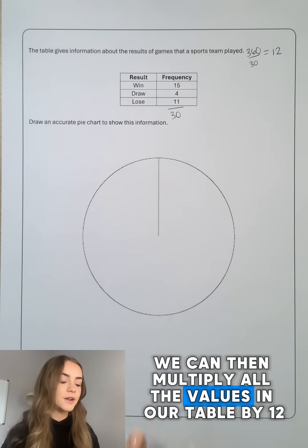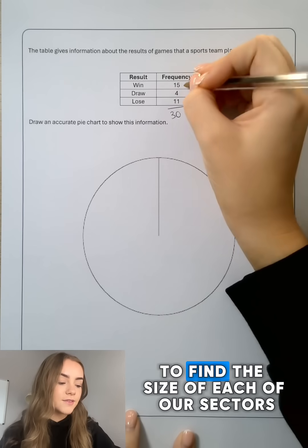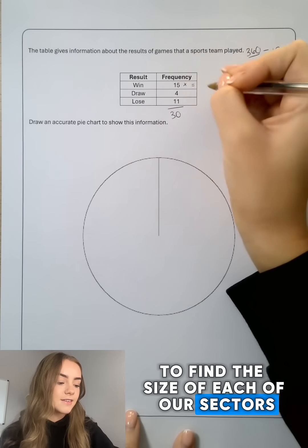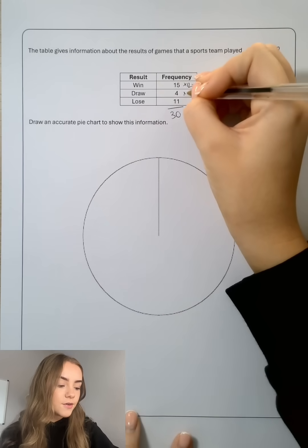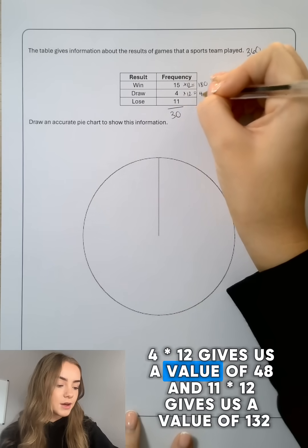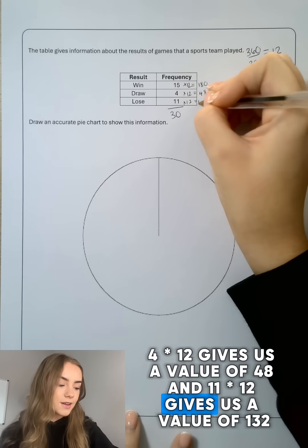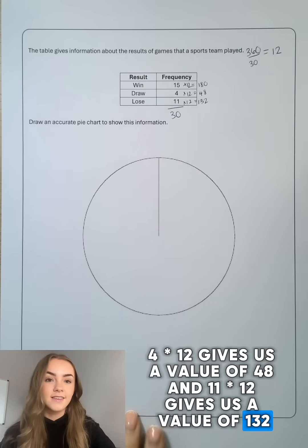We can then multiply all the values in our table by 12 to find the size of each of our sectors. So 15 times 12 will give us a value of 180, 4 times 12 gives us a value of 48, and 11 times 12 gives us a value of 132.